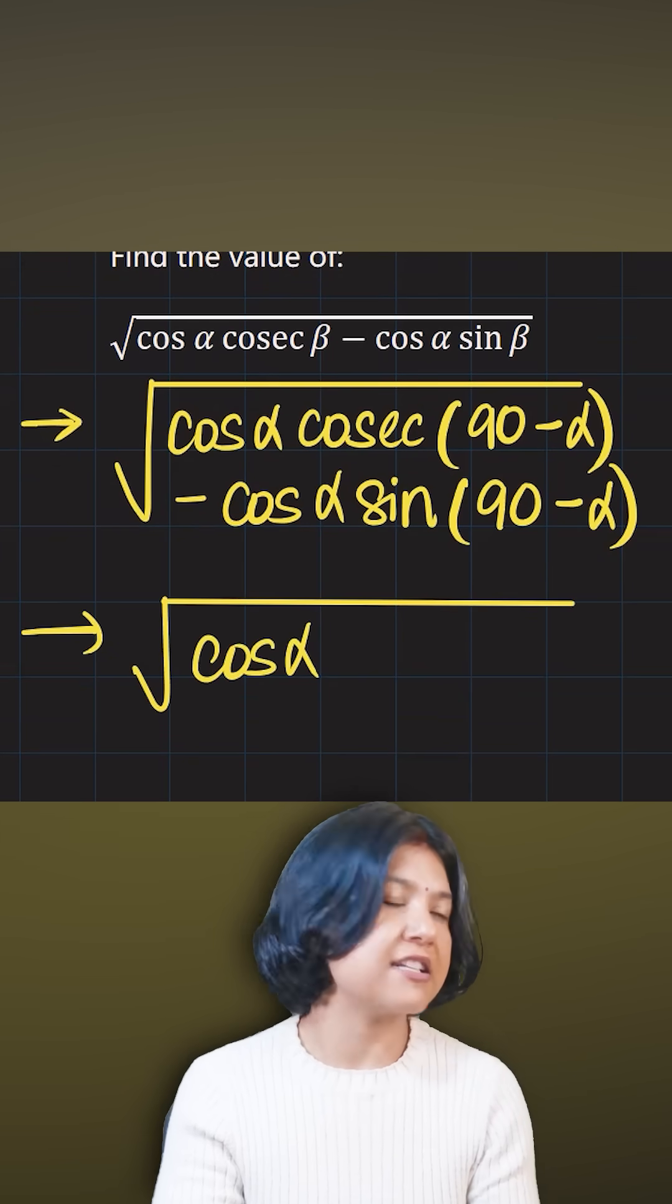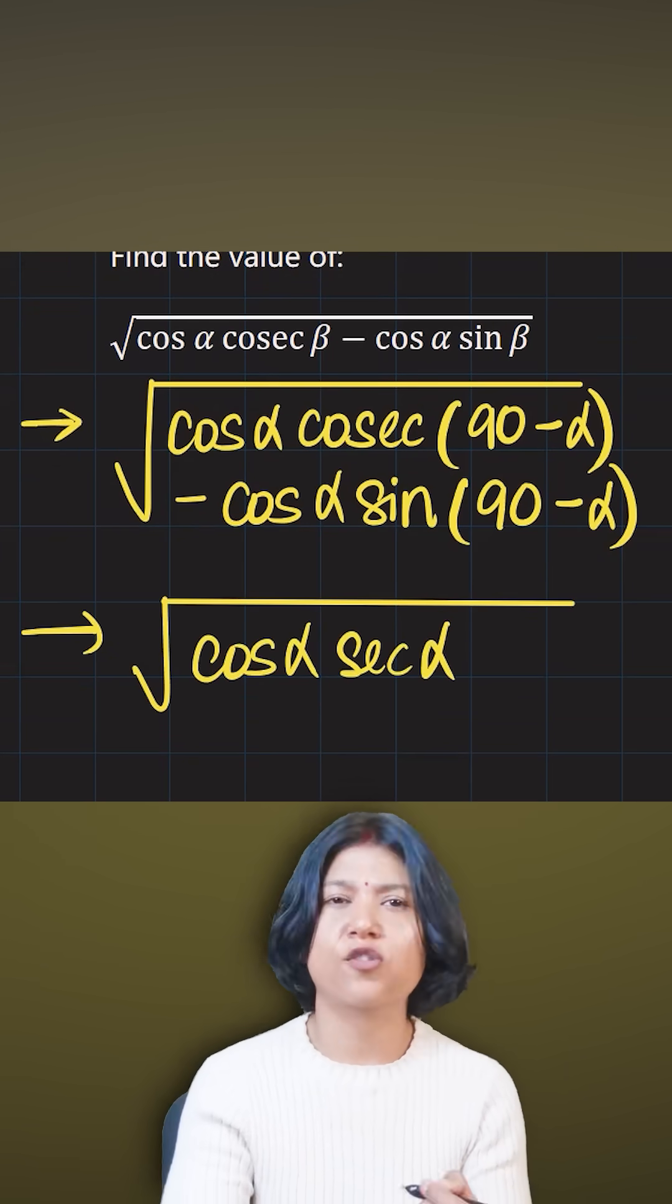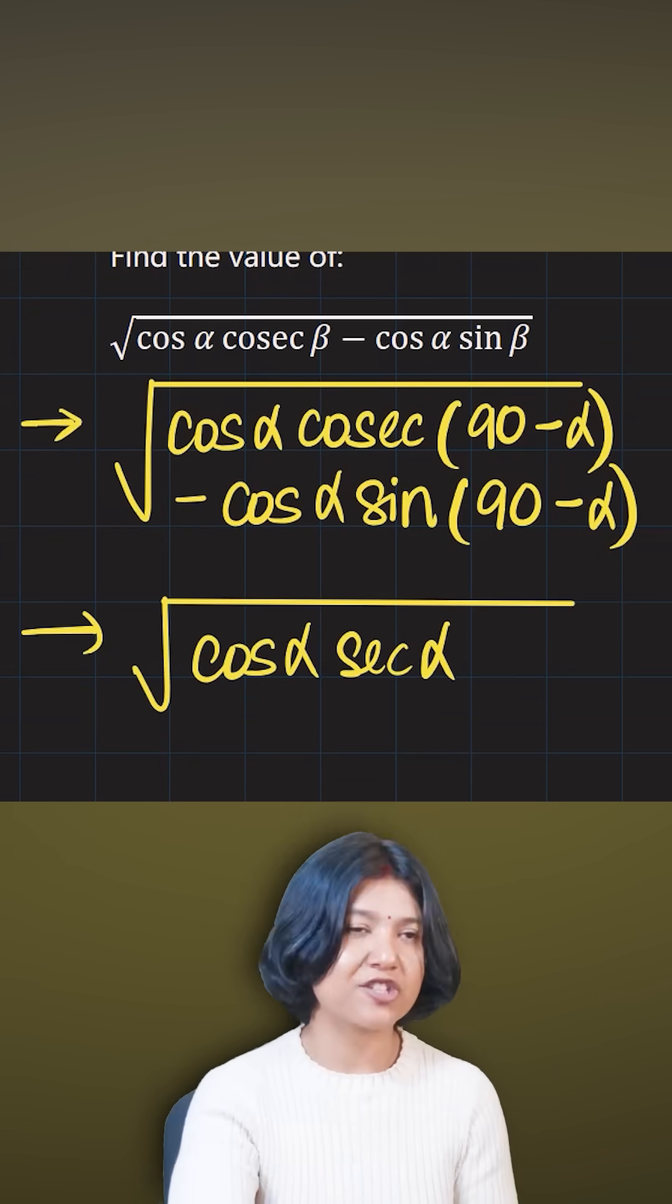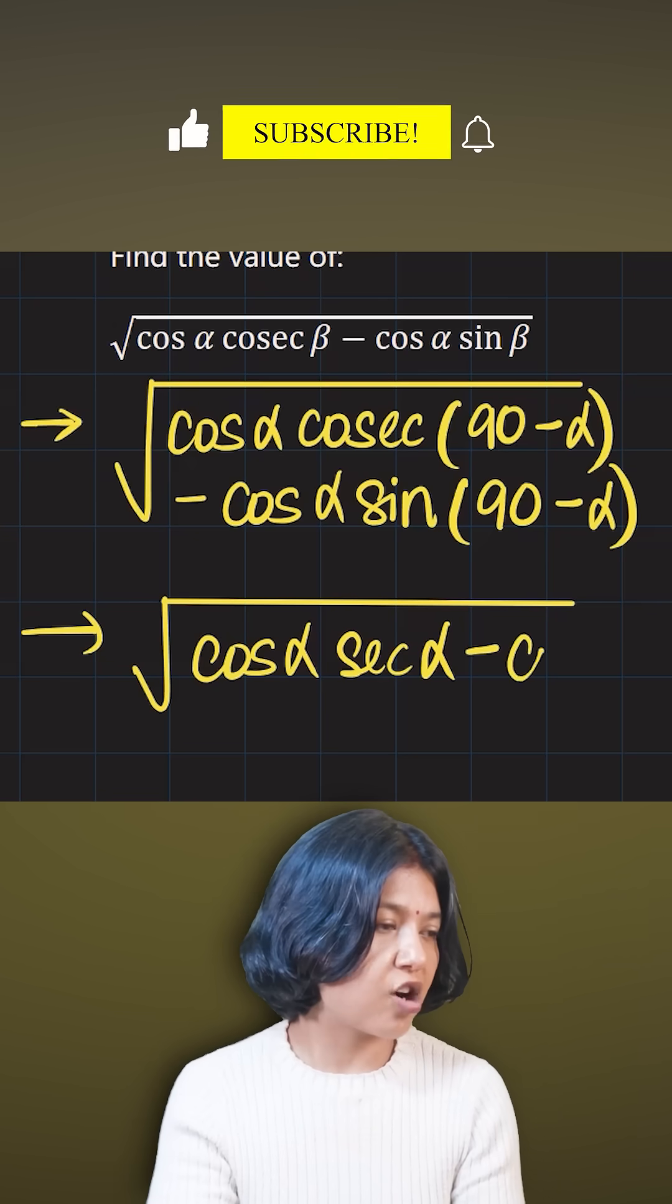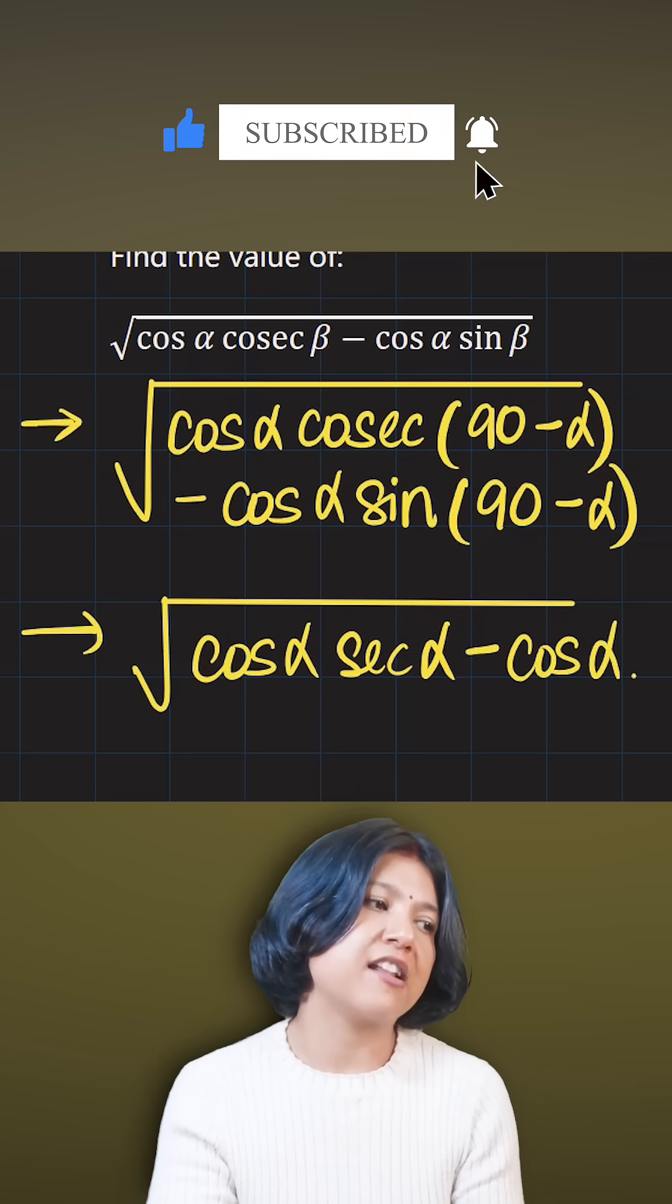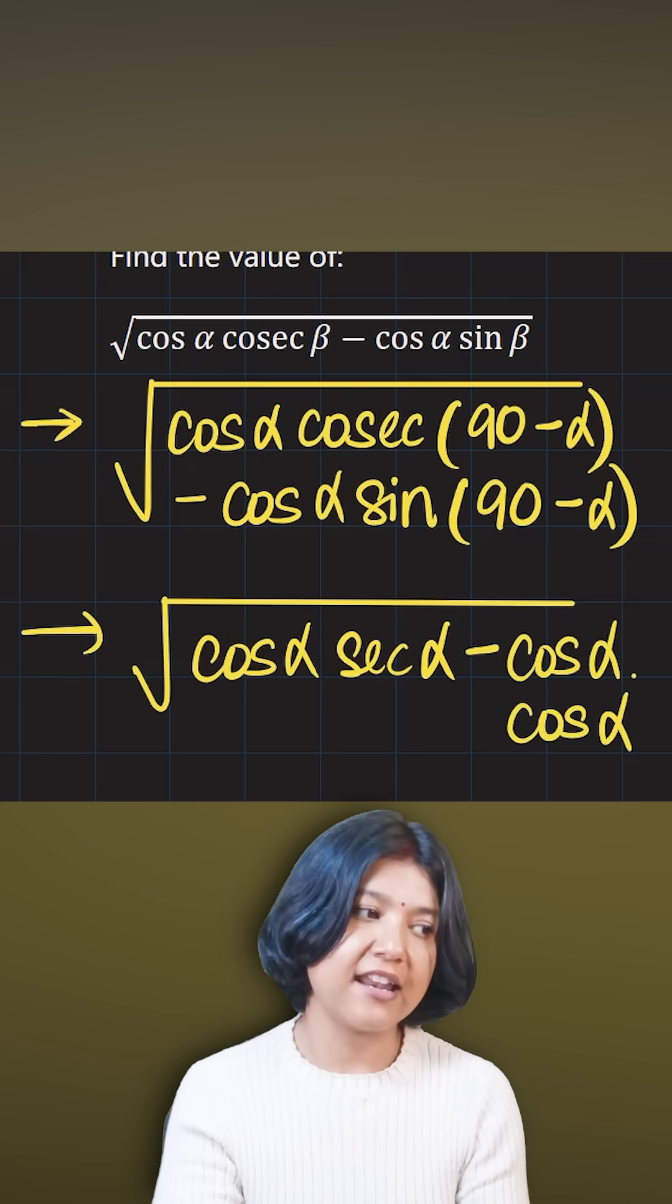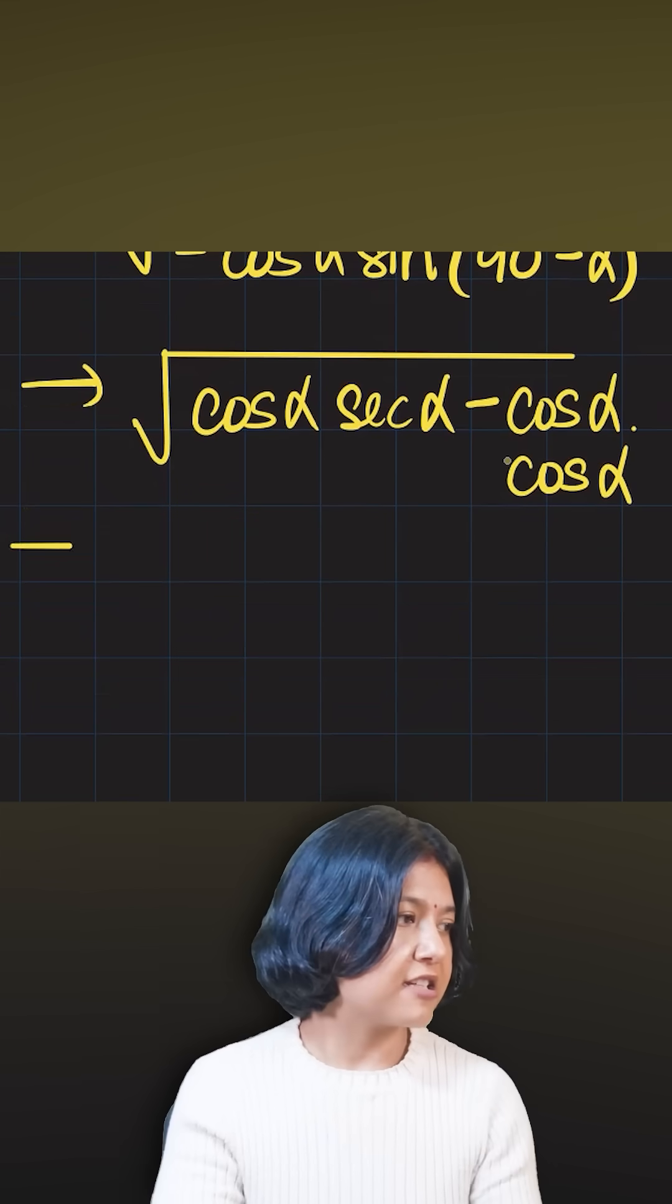Cos alpha times sin(90 - alpha) can be written as cos alpha again. So what do we get inside the root? I get cos alpha times sec alpha. Remember, cos and sec are reciprocals of each other.